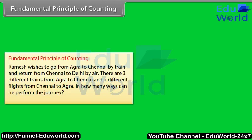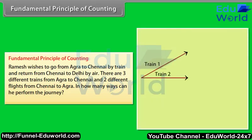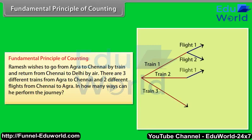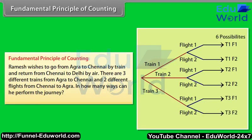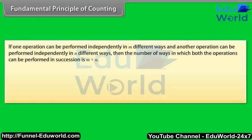Solution: Since he can choose any one of the three trains for going to Chennai, and for each such choice he has two choices for returning to Agra, he can perform the journey in 3 × 2 = 6 ways. The fundamental principle of counting states: if one operation can be performed independently in m different ways, and another operation can be performed independently in n different ways, then the number of ways in which both operations can be performed in succession is m × n.